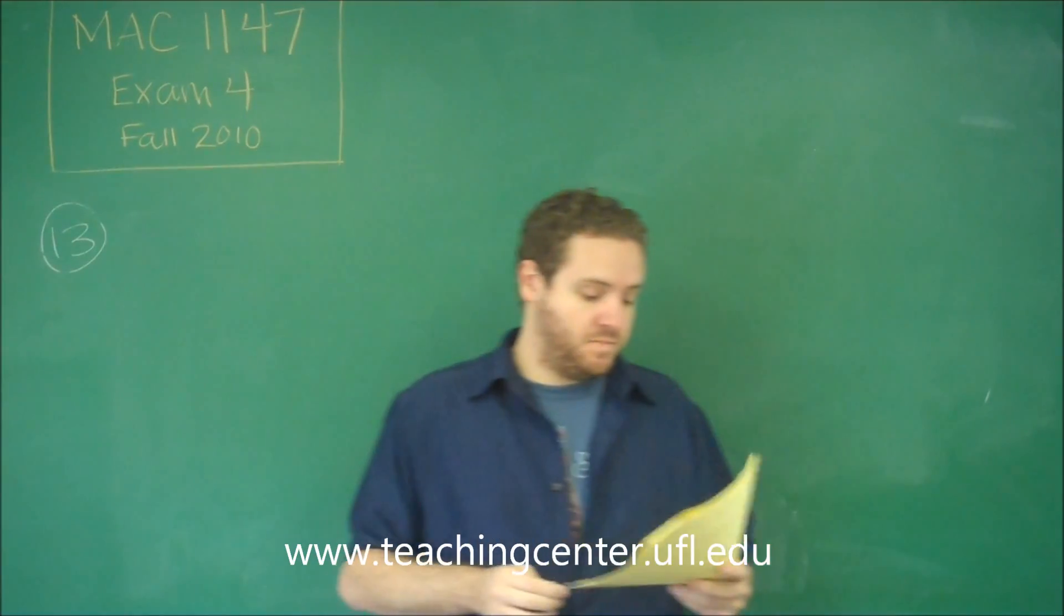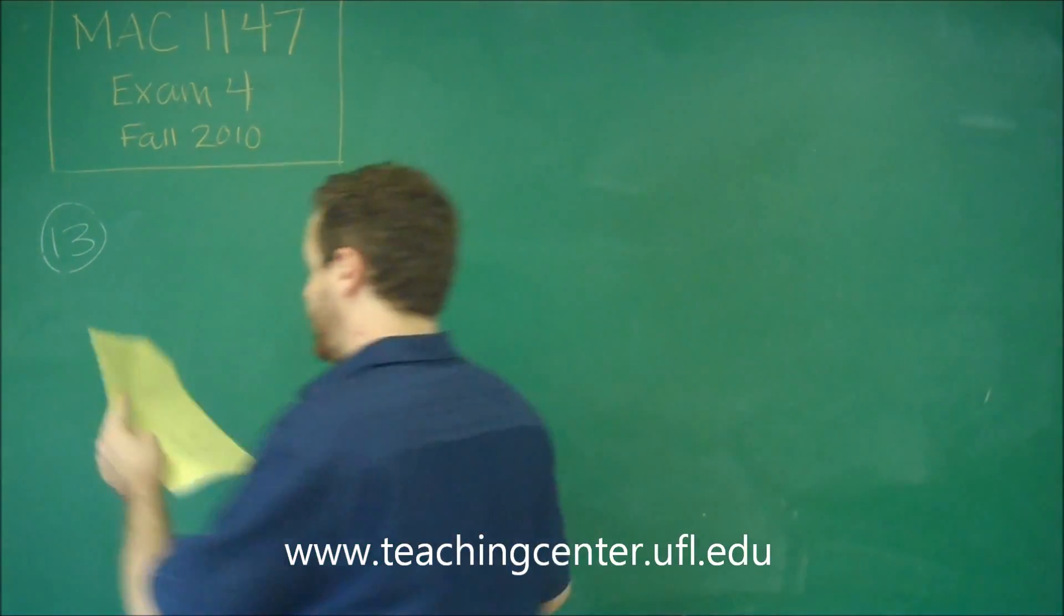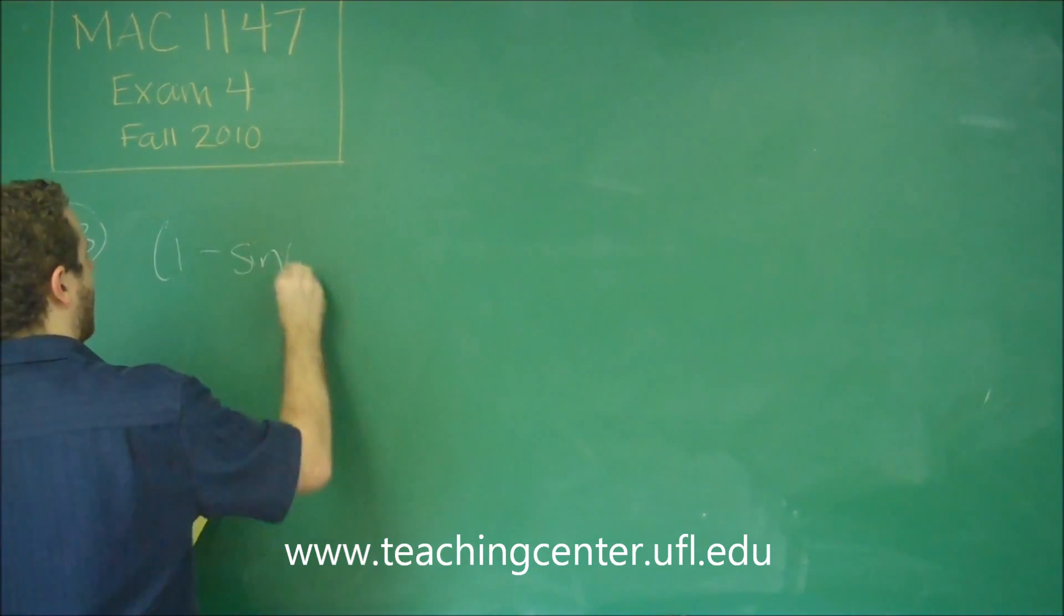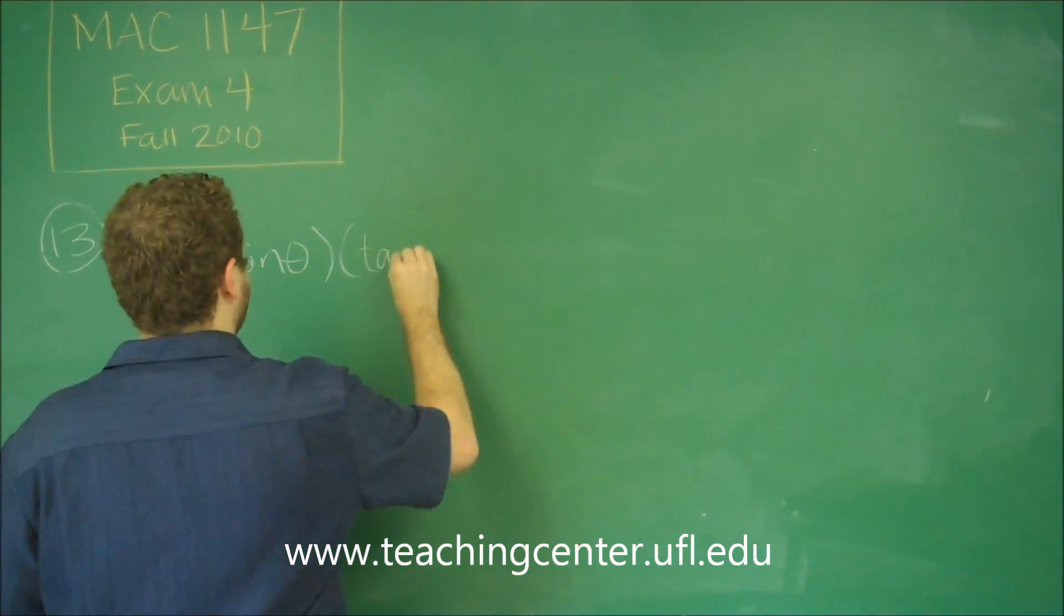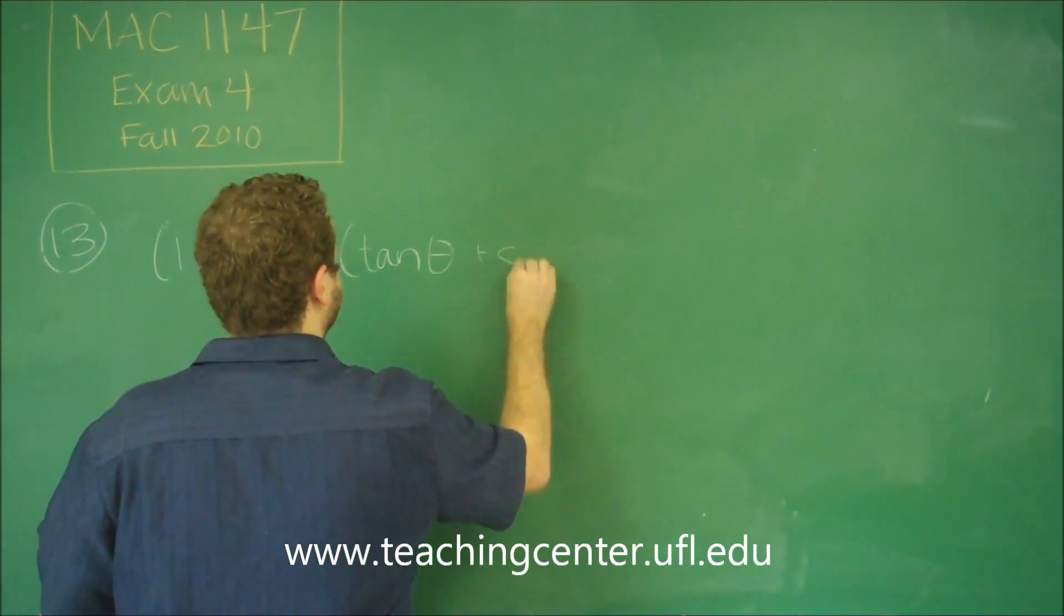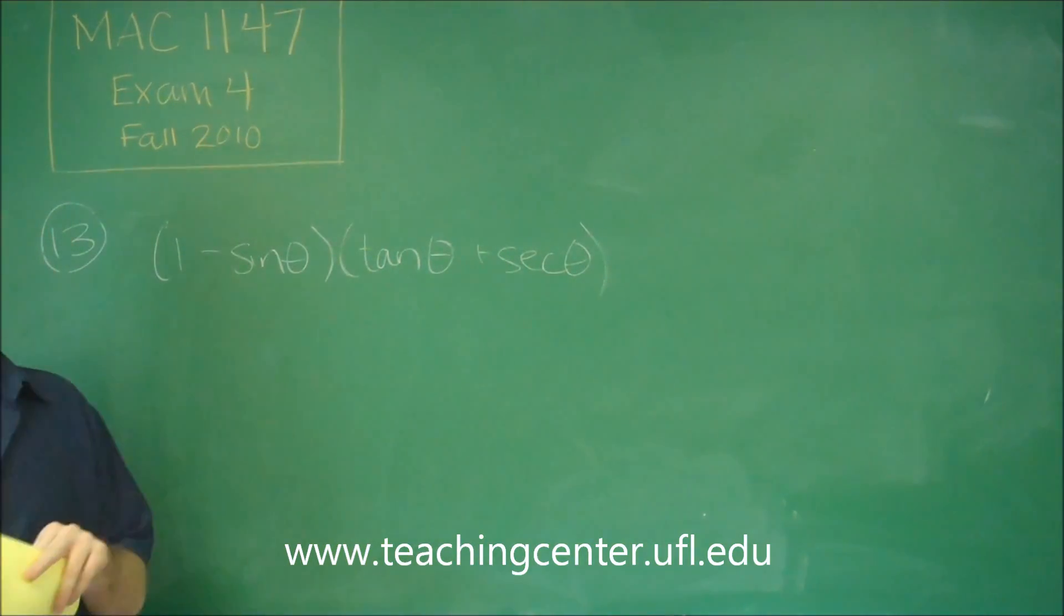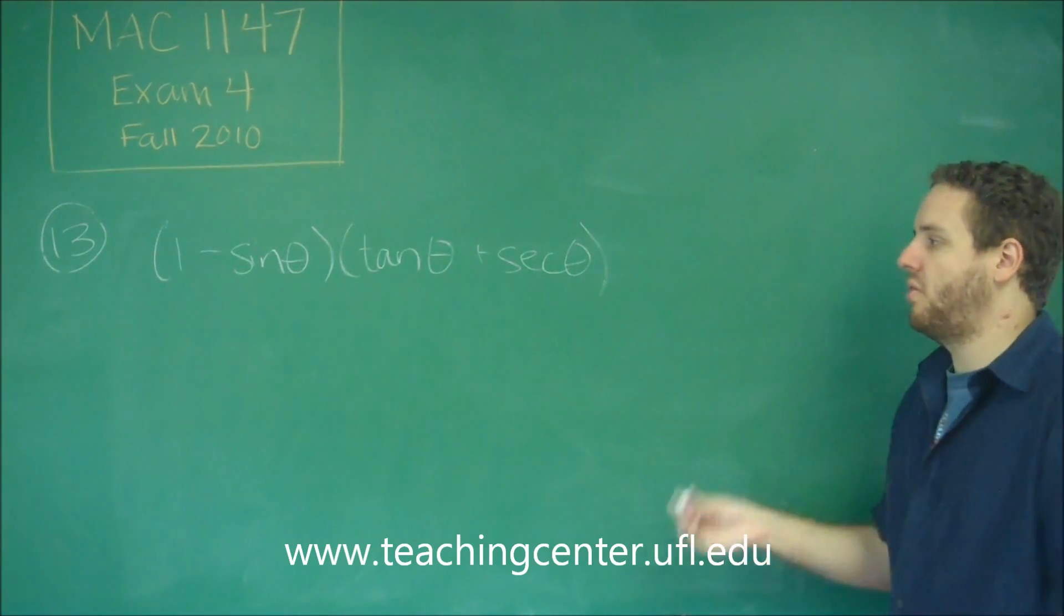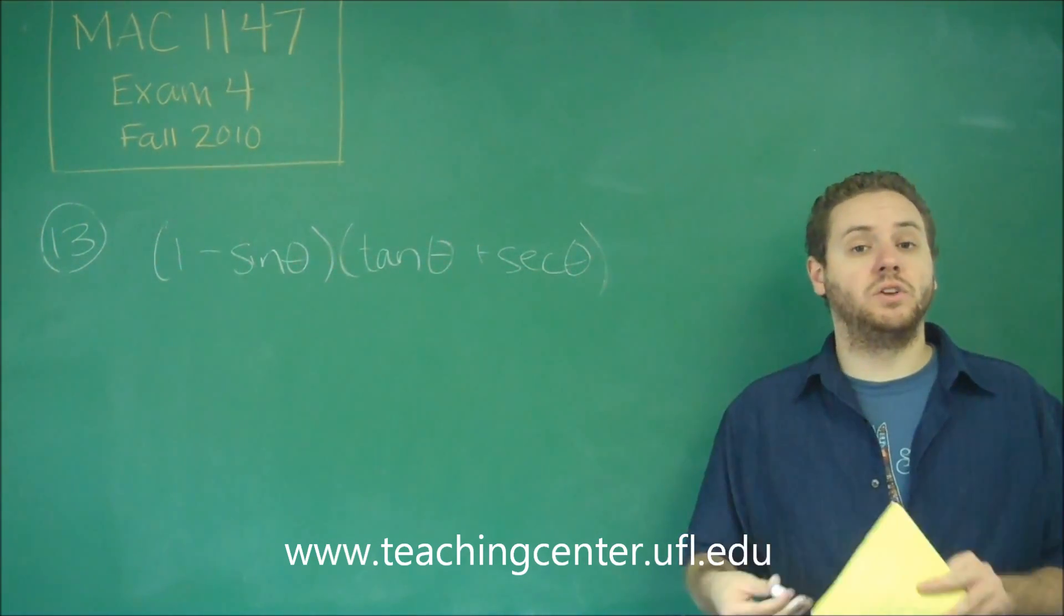Okay, so for number 13, we have to perform the operations on a kind of complicated trig equation. We have 1 minus sine theta times tangent theta plus secant theta. Problems like this can be confusing because even if you know all the rules and identities, sometimes they can be difficult just because it's hard to tell what you have to do first.